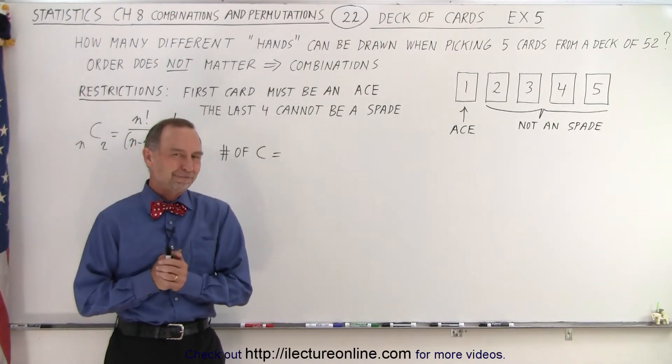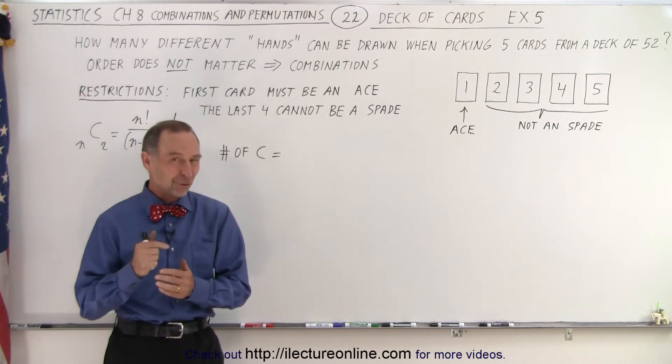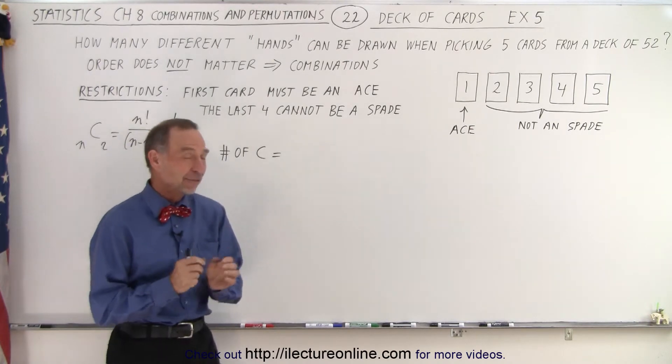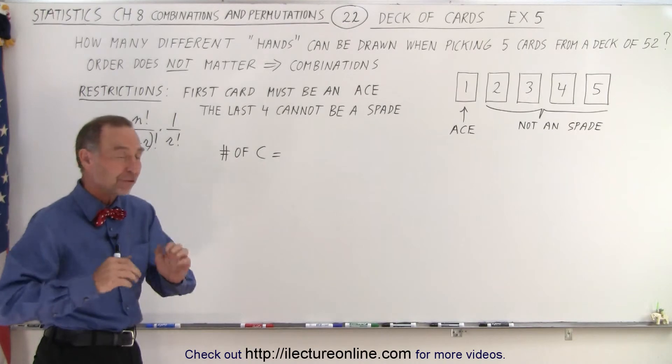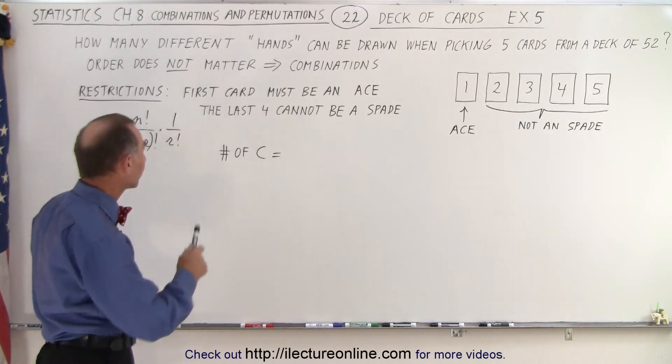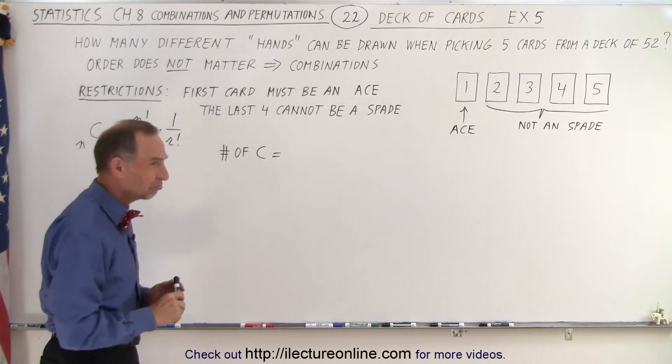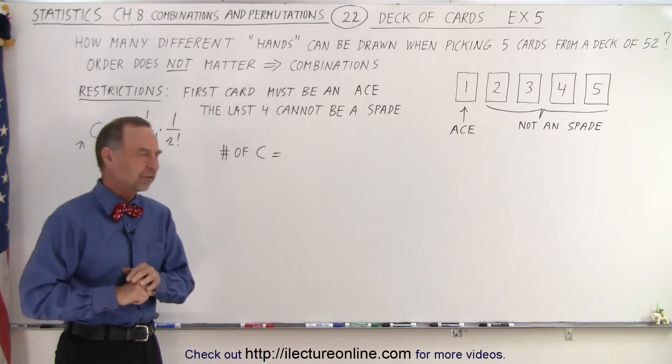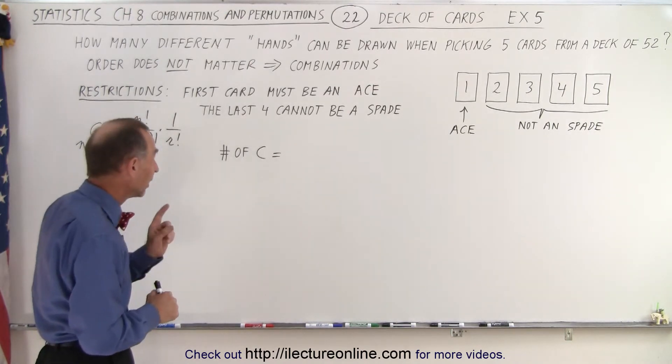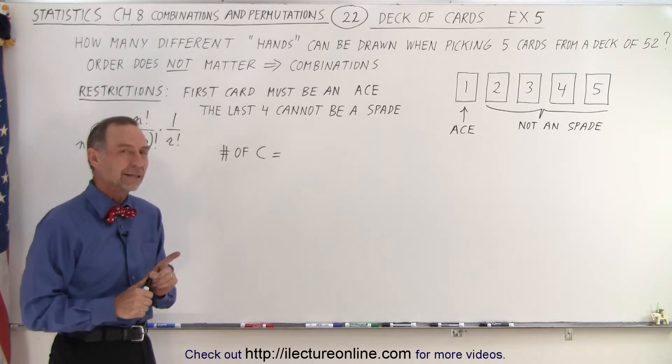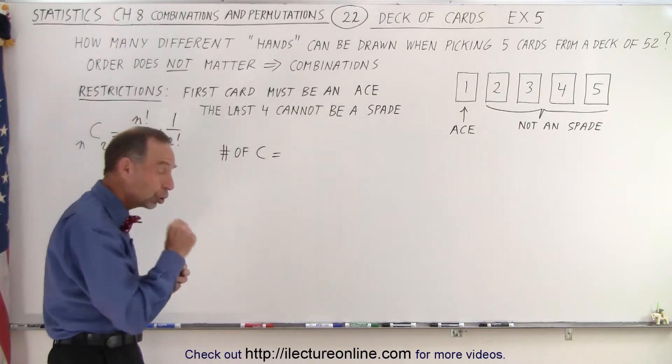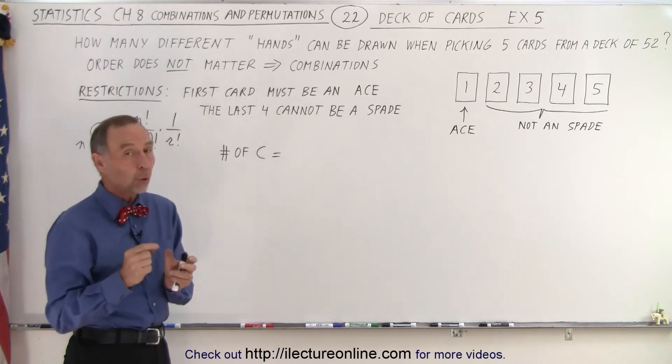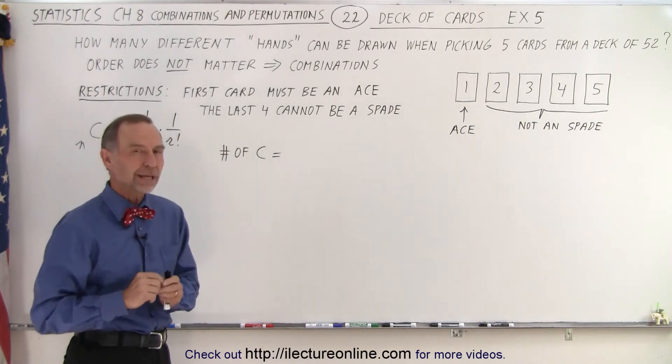Welcome to ILectureOnline. This one is a tricky one. Here we have some interesting restrictions. We have five cards to be drawn from a deck of 52, but the first card must be an ace. There doesn't seem to be anything special or unusual about that, but the last four cannot be a spade. The reason why this is tricky is because that first card could be the ace of spades, or it could be one of the other three aces.